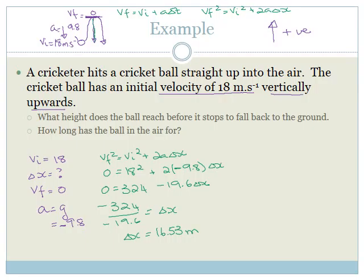So the maximum height the ball reaches is 16.53 meters. Now the second question asks: how long has the ball been in the air? The amount of time it takes to go up is equal to the amount of time it takes to come down, because the only force acting on it the whole time is the force of gravity.